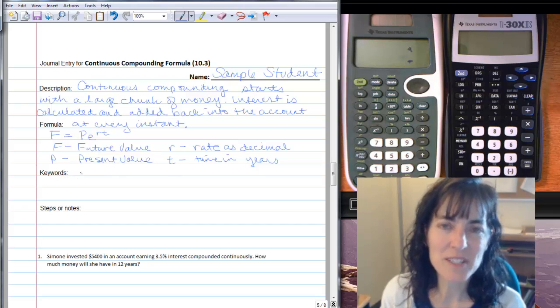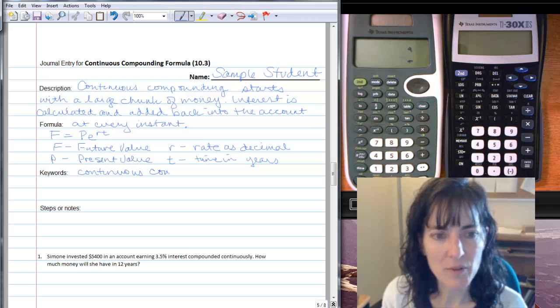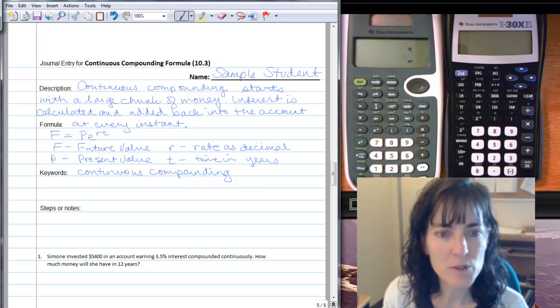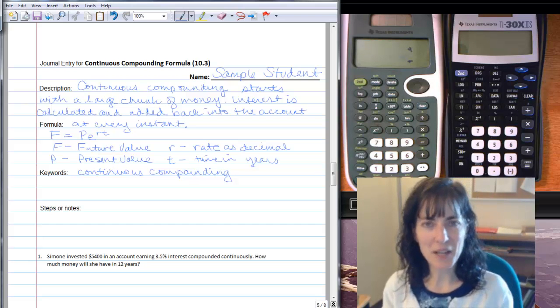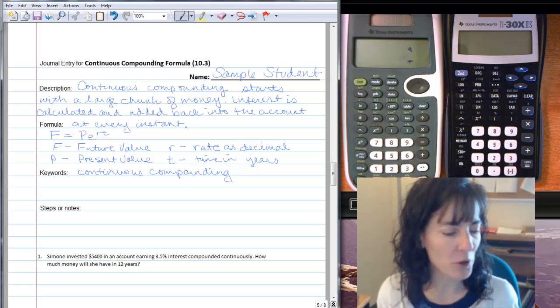So some keywords that you should expect to see are continuous and compounding. And if you see those two words, you have to see both of them, continuous and compounding. And if you see them, that means that you need to use this PERT formula.